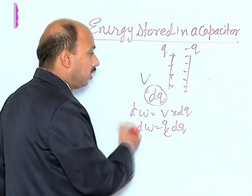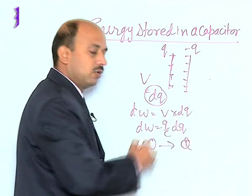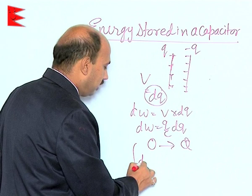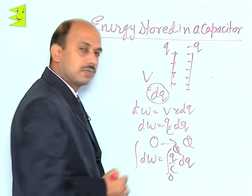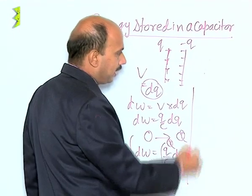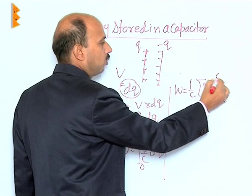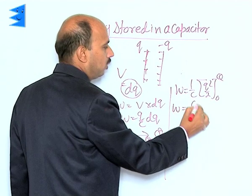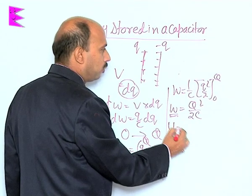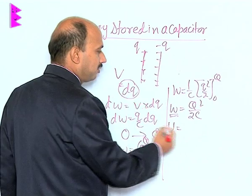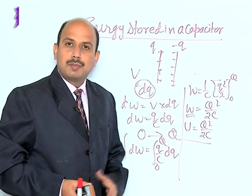Now, if you want to store charges from 0 to total charge Q, we integrate: W = ∫₀^Q (Q/C) dQ. Integrating, we get W = (1/C) · [Q²/2] from 0 to Q, which gives W = Q²/(2C). This work done is the potential energy, or energy stored in the capacitor, equal to Q²/(2C). By this way we can calculate the energy stored in a capacitor.